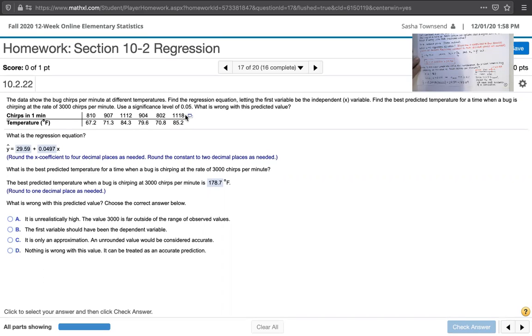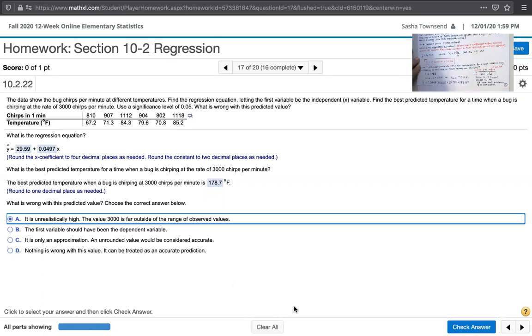We're assuming that this pattern that holds for the x values between 800 and about 1100 is going to continue to hold all the way up to x equals 3000. And that might not be true. It may not be accurate. So let's see. When they ask what's wrong with this predicted value, it says, A says it is unrealistically high. The value is 3000 is far outside the range of observed values. So that's our answer.